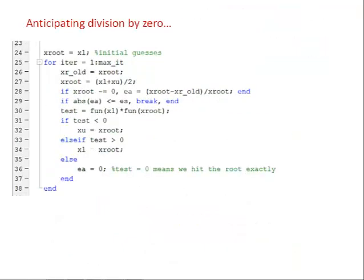Moving to the next section of code, we can see one other modification I made, just to check for the case where we might have a division by zero. If we look at our EA calculation, we see we're dividing by xroot, and so there's the possibility, which we would hit in particular if we had an initial bracket of xL equals negative 1 and xU equals 1, or something similar, that xroot could be zero.